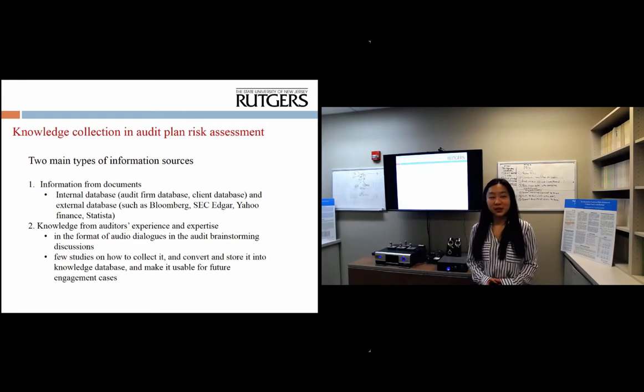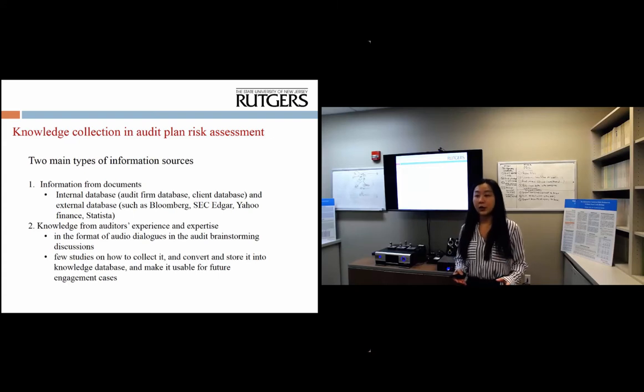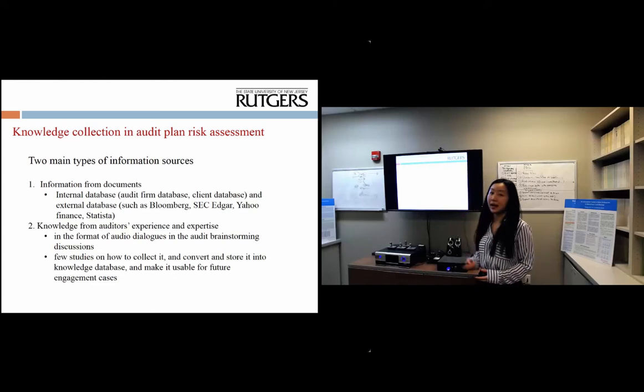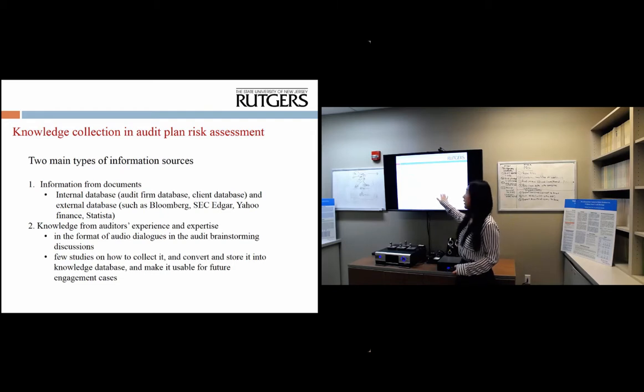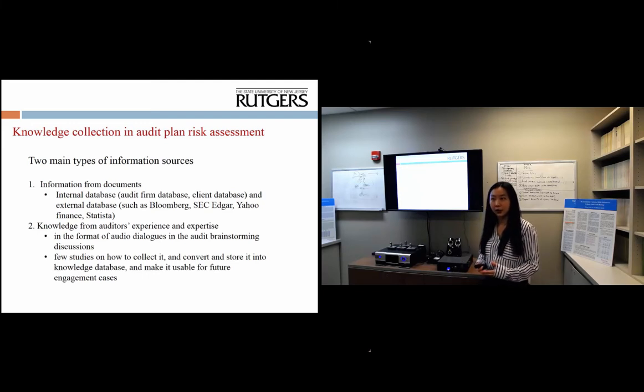During audit brainstorming sessions, the engagement team members will use various information sources to help them discuss the risk about the clients. There are two main types of information sources. One is from documents of internal or external databases such as financial statements, or sometimes they have checklists which help guide them during discussions.